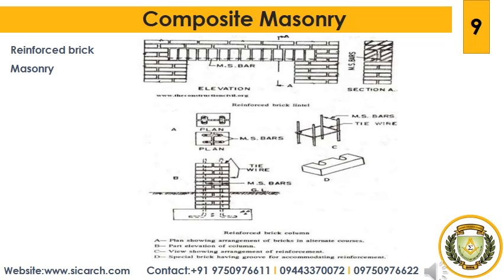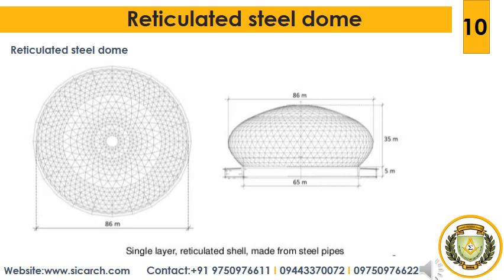Next we will see single layer free-form steel reticulated structures, simply known as single layer steel reticulated structures. Single layer reticulated shells, sometimes referred to as grid shells, became widespread in the last 15 years, mainly as so-called free-form roof structures with seemingly irregular shapes and doubly curved mid-surfaces. We will also look briefly at their history.